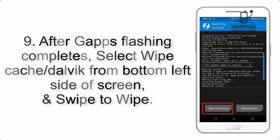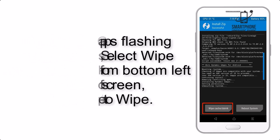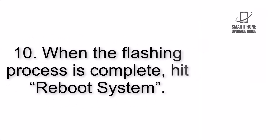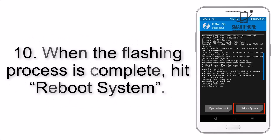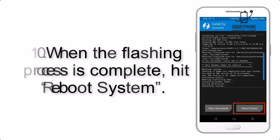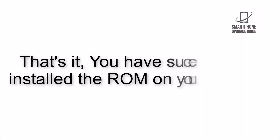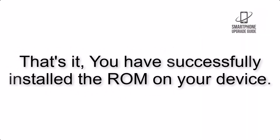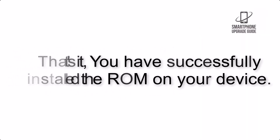Step 9: After GApps flashing completes, select Wipe Cache and Dalvik from the bottom left side of the screen and swipe to wipe. Step 10: When the flashing process is complete, hit Reboot System. That's it — you have successfully installed the ROM on your device.